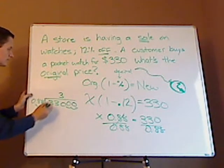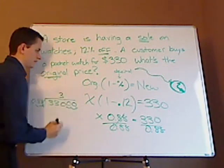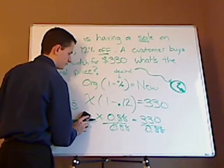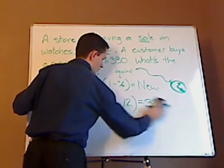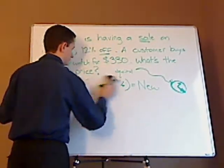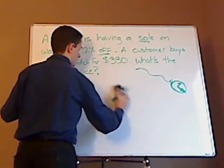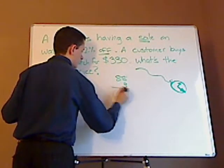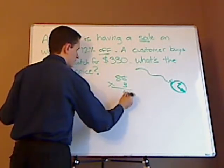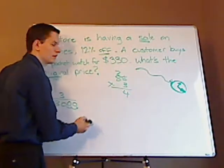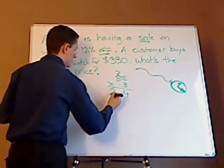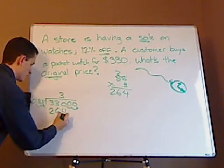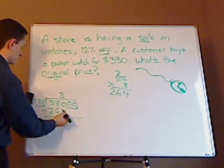Alright, 3 times this, if I do a little side work. Let me erase this. A little side work. So, 88 times 3. 8 times 3 is 24. Carry the 2. 3 times 8 is 24 plus 2 is 26. So, 264. Minus.